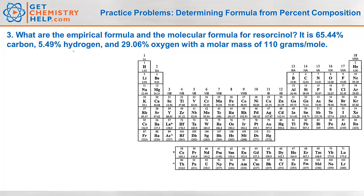Number 3. In this one it wants us to find both the empirical and the molecular formula. The molecular formula is always some multiple of the empirical formula. We're going to find the formula of resorcinol: 65.44% carbon, 5.49% hydrogen, 29.06% oxygen, and its molar mass — the mass of the molecular formula — is about 110 grams per mole.